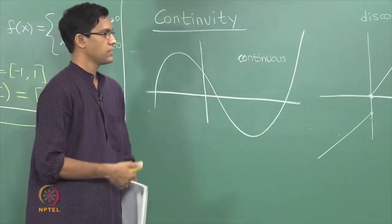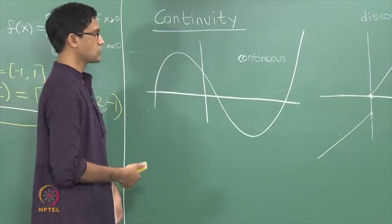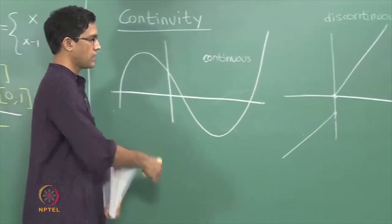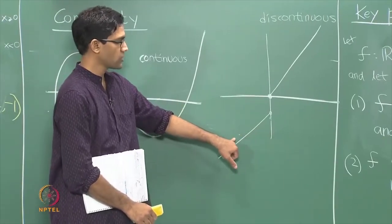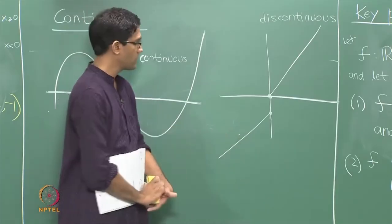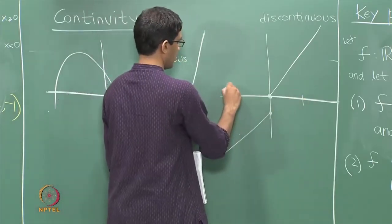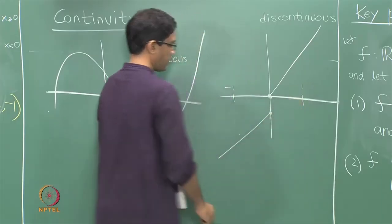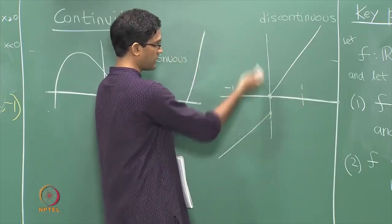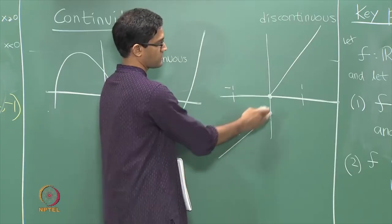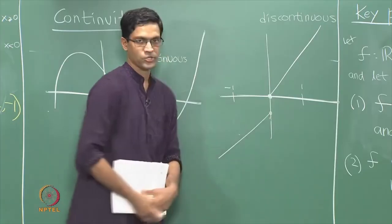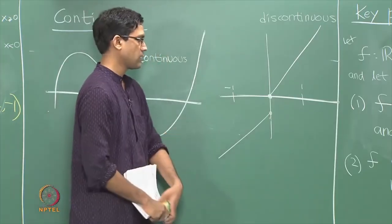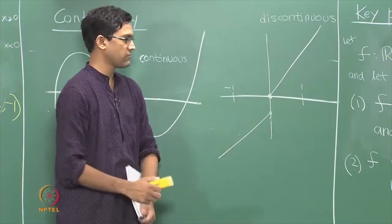Both these statements are very easily false in examples of discontinuous functions. We have already seen an example where the maximum and minimum values are attained — when you take the interval to be [−1, 1] — but every value between the minimum and maximum was not attained. There were values, for instance between 0 and minus 1, which were not attained by the function. That is an example where f is discontinuous and the second property fails.